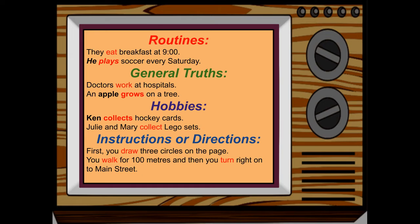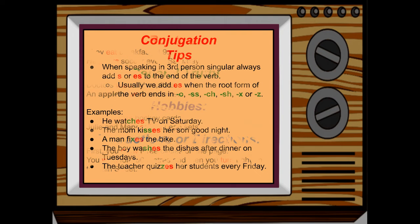And finally, for instructions or directions: first, you draw three circles on the page; you walk for 100 meters, and then you turn right onto Main Street. Now, you might wonder why some verbs have S at the end and others do not. Let's explore.